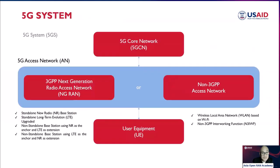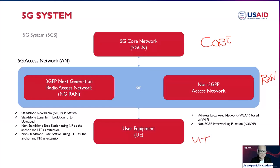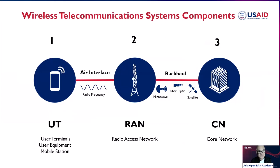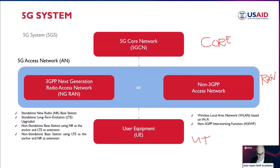The 5G system architecture is divided into three major parts: the 5G core network, the radio access network, and user terminals — the same concept as wireless telecommunications, just with different names and functionality. The core is called the 5G core network or 5G-CN. The RAN can be a 3GPP Next Generation RAN or NG-RAN, or a non-3GPP access network such as Wi-Fi. The same concept applies: you have user terminals, RAN, and the core network.